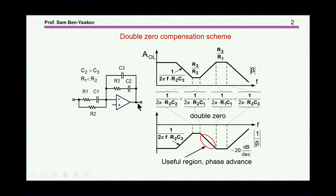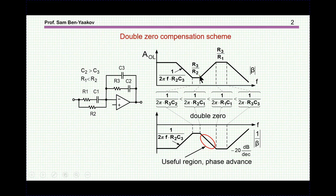The subject of this presentation is: what is the effect of the transfer function of a real, practical amplifier on the total transfer function of a controller built around it? This particular controller is a double-zero controller with two zeros. We are primarily interested in a specific section for closing the loop, done by looking at one over the transfer function, as discussed in the previous video.